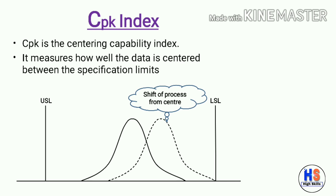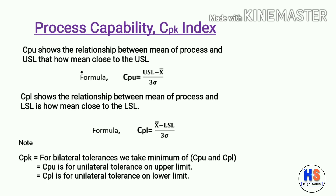Next is the CPK index. CPK is the centering capability index — it measures how well the data is centered between the specification limits. You can see the shift of the process from center between USL and LSL. The formulas for CPK use CPU and CPL. CPU shows the relationship between the mean of the process and USL. The formula for CPU is: CPU = (USL − X̄) / 3σ.